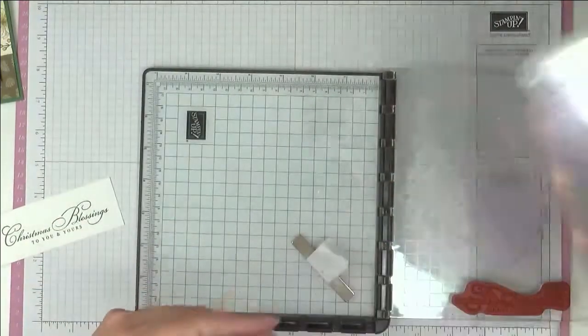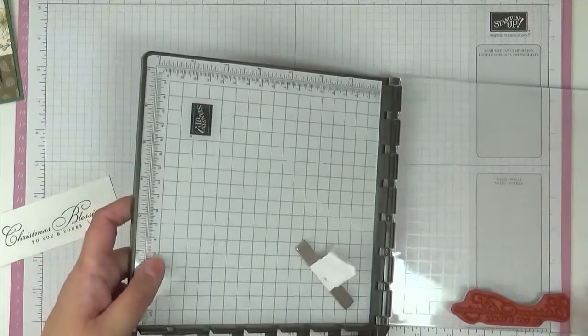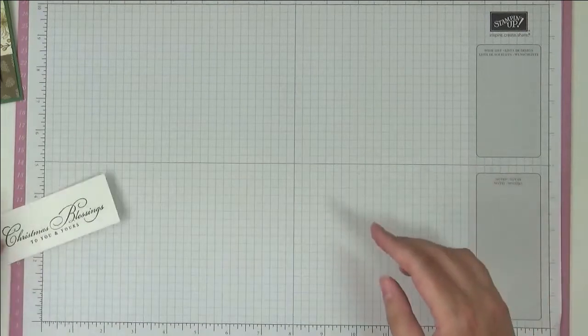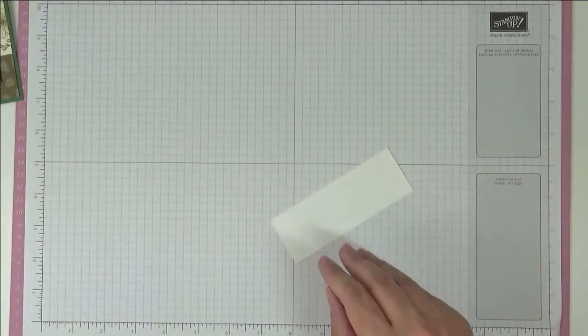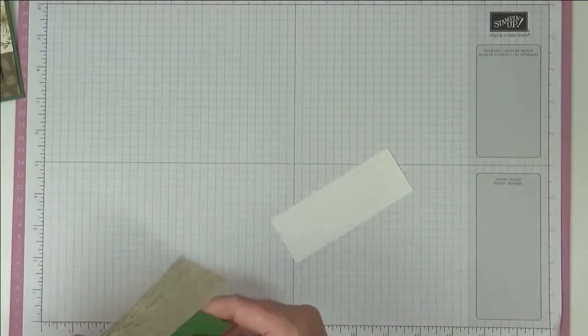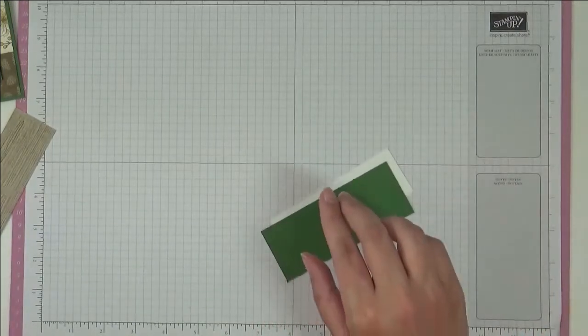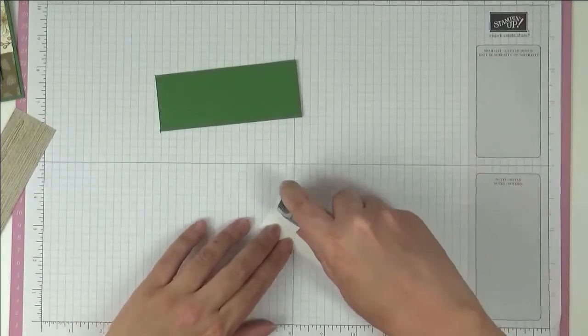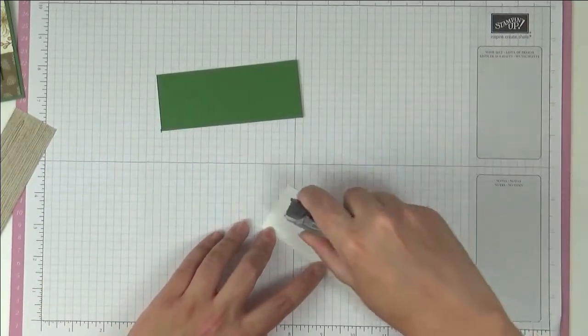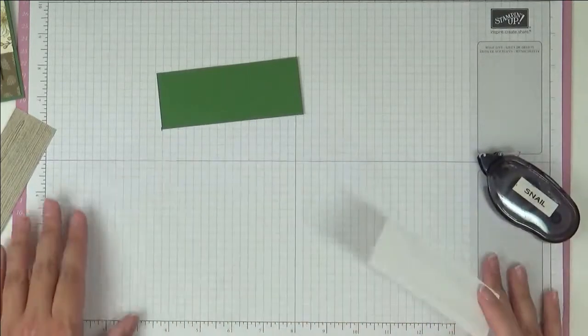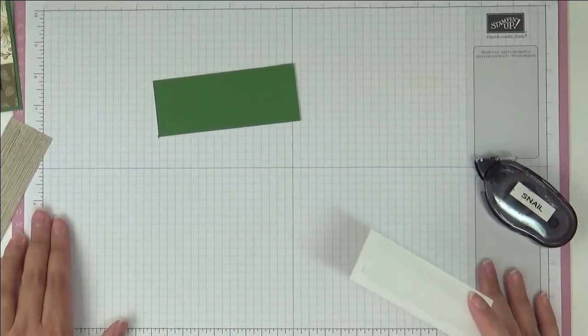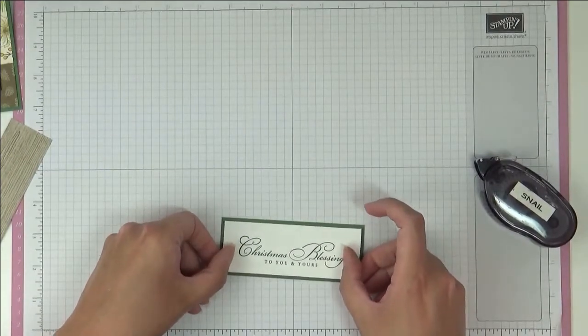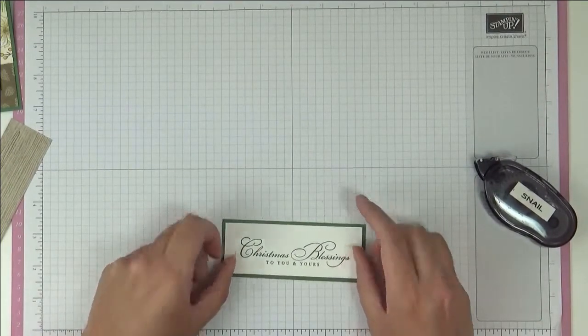I love the Simple Chamois. It's just the best, really is a useful tool. Okay, so now we're going to stick this down to a piece of Garden Green that measures four and a half by eleven and a half centimeters. I'm just going to do this with some Snail. You can do this with adhesive of your choice like Tombow or Stampin' Seal, whatever makes you happy. I'm just using up my stock of Snail because I don't want to waste stuff.